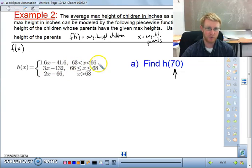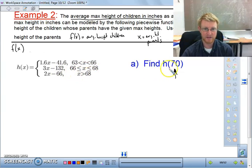So is 70 in between 63 and 66? No. So we can't use that equation. Is 70 in between 66 and 68? No, it's not. So the last one is x is greater than 68, which 70 is greater than 68. So we have to use this last function.